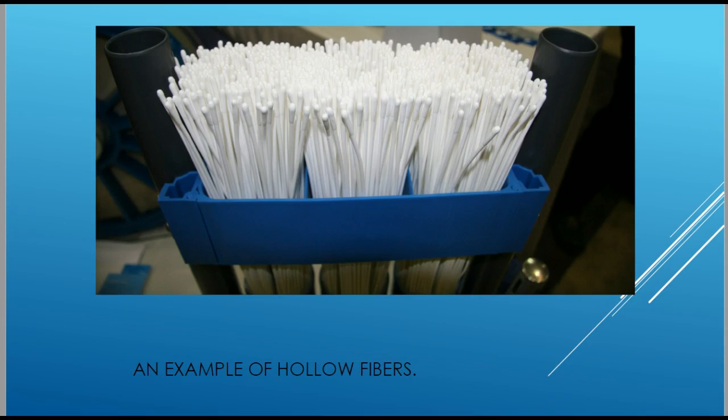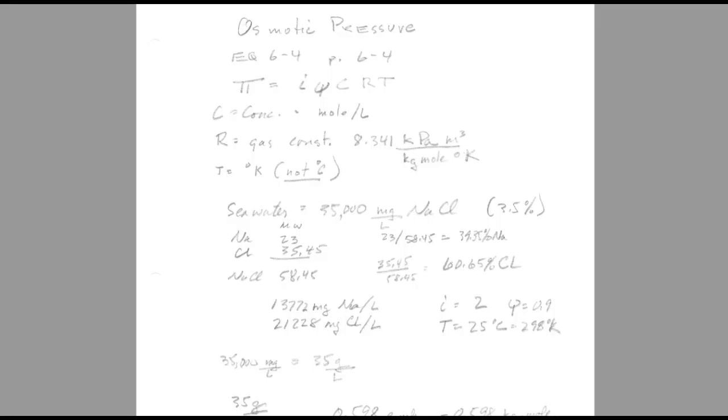Here's an example of hollow fibers. Hollow fibers can range from this size, which looks like about two millimeters in diameter, to the size of human hair, which is common for air separation membranes but not really for fluid handling membranes.